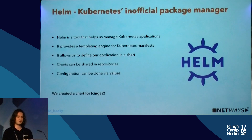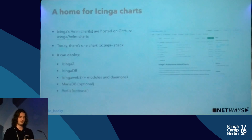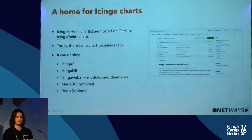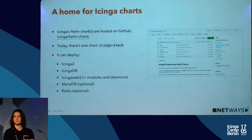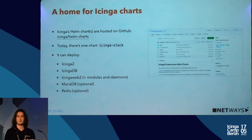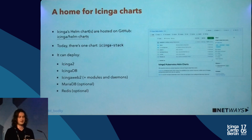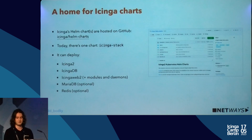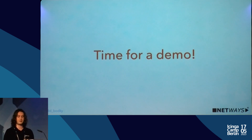Charts can be shared in repositories — similar to using apt, yum, or dnf. Charts can also be configured at deploy and upgrade time with so-called values, which get pasted into the templates when Helm deploys the application. Some colleagues and I at NetWays decided to create an initial chart for Icinga 2. Icinga was kind enough to provide a Helm charts repository on GitHub in their official organization, giving us one centralized spot to publish charts. Today there's one chart called 'icinga-stack'.